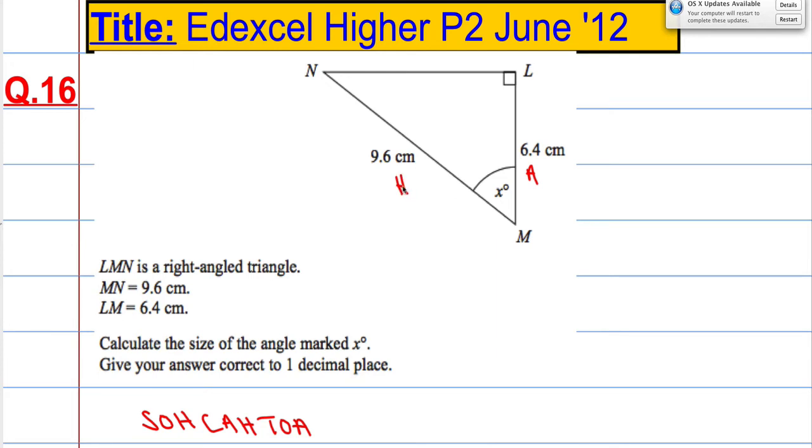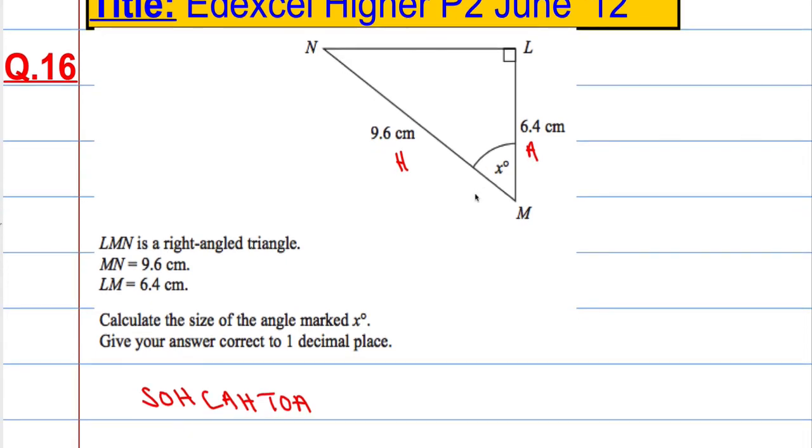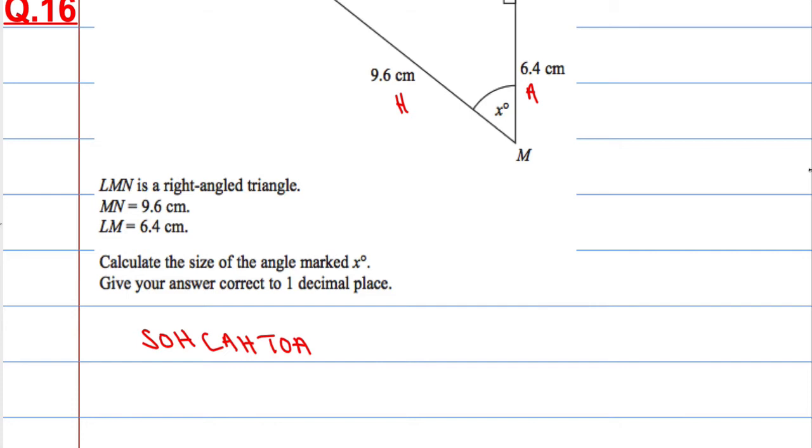So we've got A and H. And we ask ourselves, which of the trig ratios are going to use that use A and H? It must be this one here. So C, A and H are beside each other.